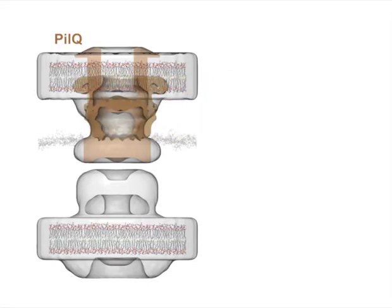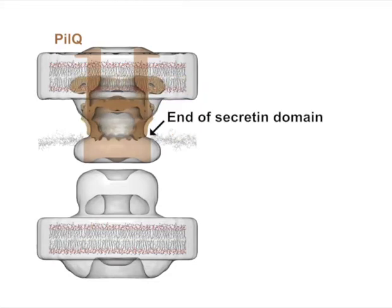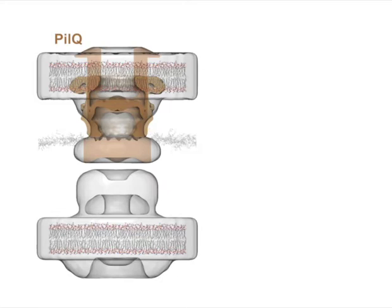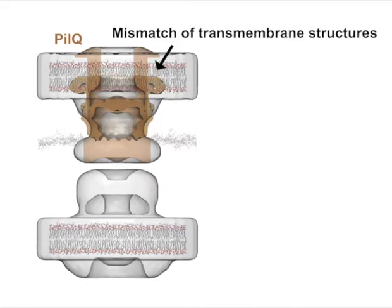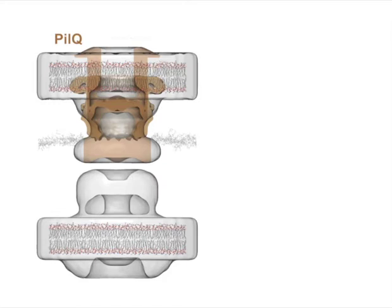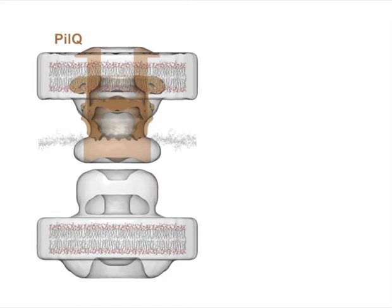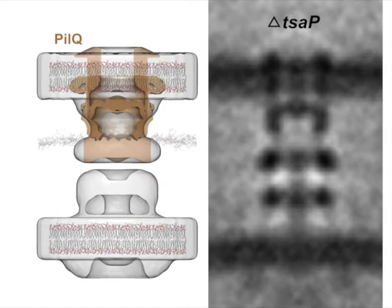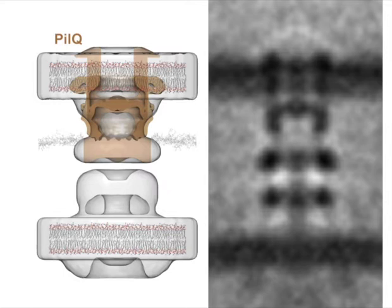Overlaying all these structures allowed us to identify the boundary of the secretin domain in the basal body. Below the secretin domain of PLQ lie the N1 and N0 domains. The transmembrane regions of the single-particle reconstructions did not match the in vivo subtomogram average, likely because detergent solubilization failed to fully support them. In order to generate a better representation of the secretin domain structure in vivo, we analyzed the structure of the type 4 pilus mutant missing the TSA-P protein. In its empty basal body structure, the secretin domain of PLQ pulls away from the N1 and N0 domains, as indicated by the arrows.